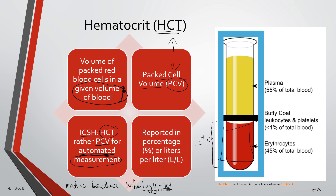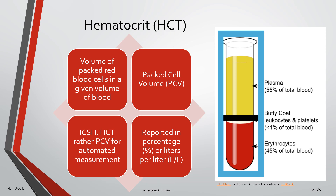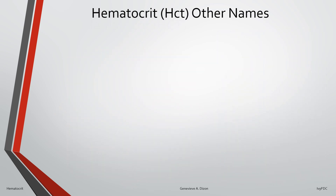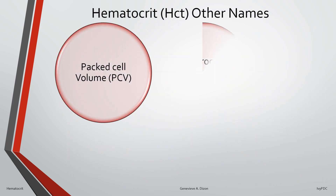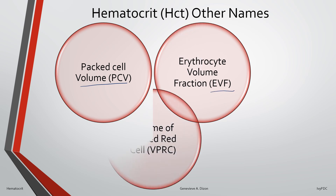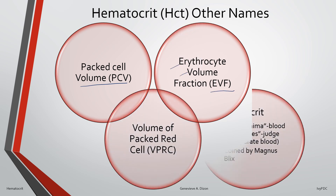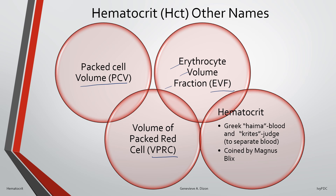Hematocrit is reported either as a percentage or as liters per liter. Other names for hematocrit aside from PCV include EVF, or erythrocyte volume fraction, and VPRC, which stands for volume of packed red cell. The term hematocrit comes from two Greek words — haima, meaning blood, and kritis, meaning to judge or to gauge blood — so hematocrit means to separate blood.